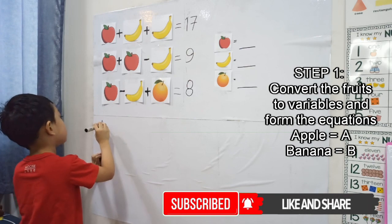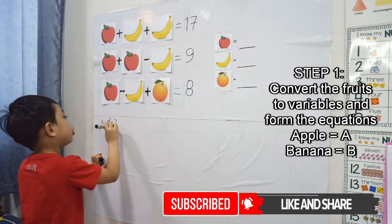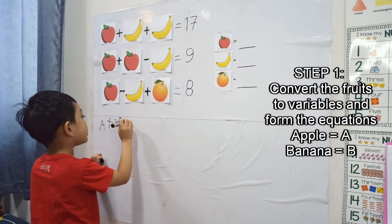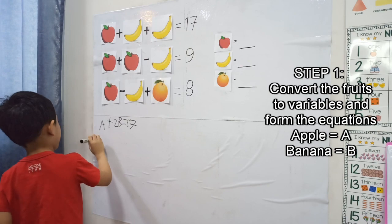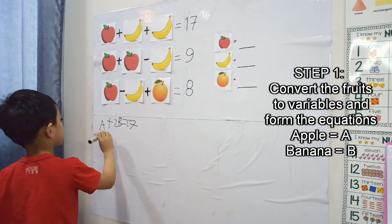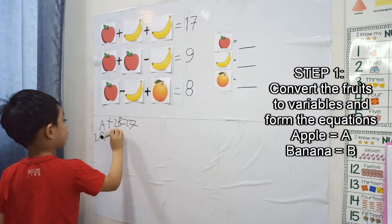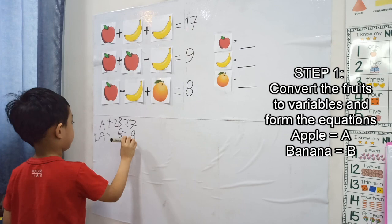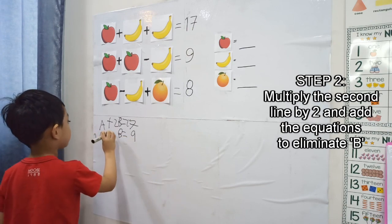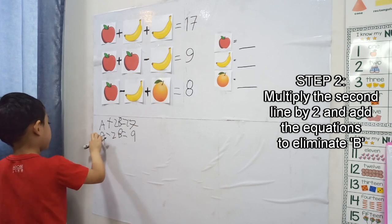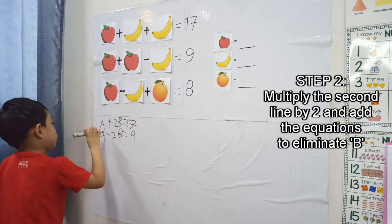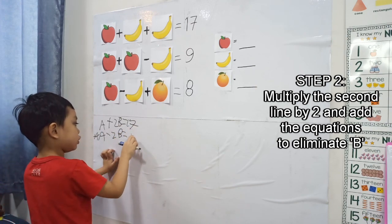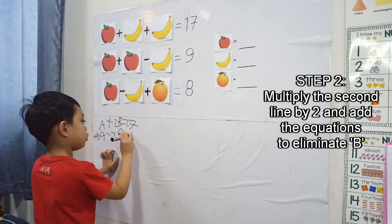A plus 2B equals 17. 2A minus B equals 9. Times by 2.